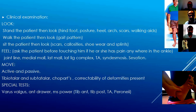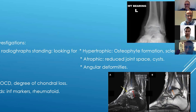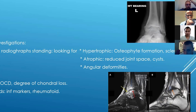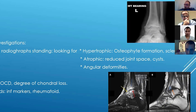For investigations, start with plain radiographs — and importantly they must be standing (weight-bearing) views, which are stress views showing whether or not the patient's ankle is aligned. Look for signs of osteoarthritis. I divide them into hypertrophic signs and atrophic signs, plus angular deformities. Hypertrophic signs include osteophyte formation and sclerosis. Atrophic signs include reduced joint space and subchondral cysts. This guides treatment — if you've got hypertrophic signs you can buy time before definitive treatment.